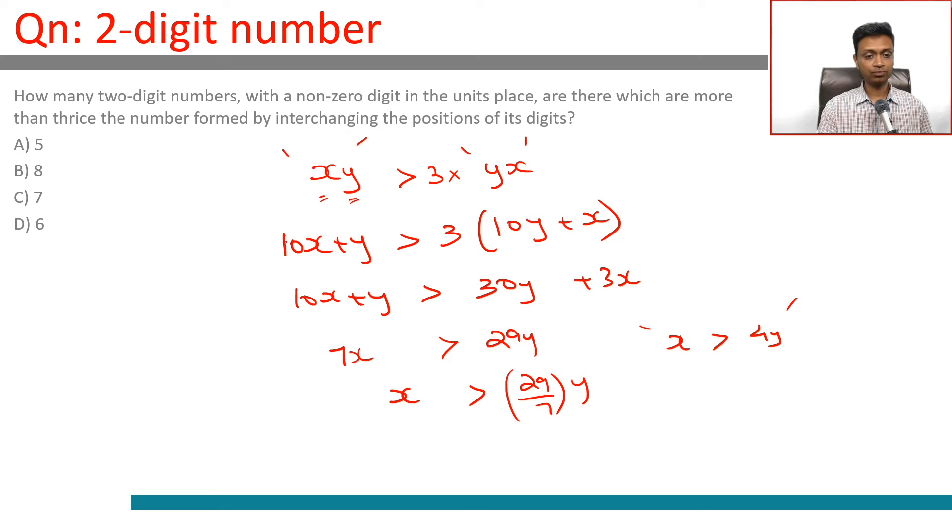If you put y equal to 1, x greater than 4y, x could be 5. So we could have 51, one number being 51, other number being 15. 51 is greater than 3 times 15, this works.